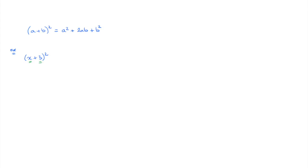To expand this expression and write all the terms, all we need to do is copy the formula replacing every a by x and every B by 3. So that would be x squared plus 2 times x times 3 plus 3 squared, which leads us to x squared plus 6x plus 9. And we're done — we've expanded x plus 3 squared.